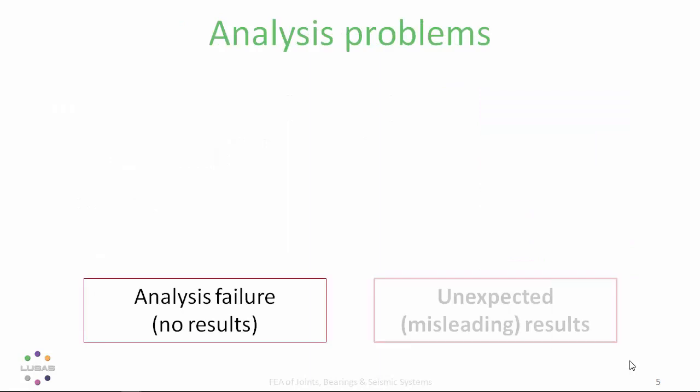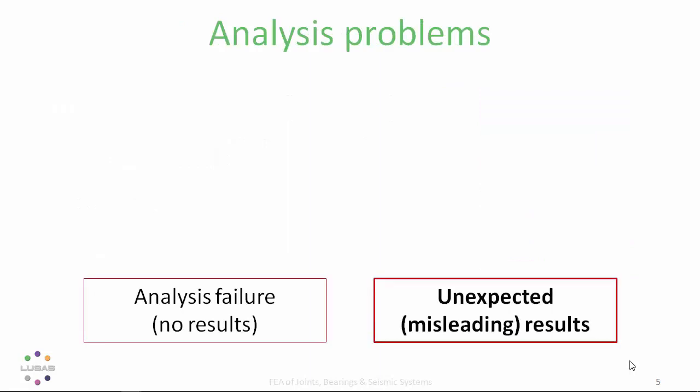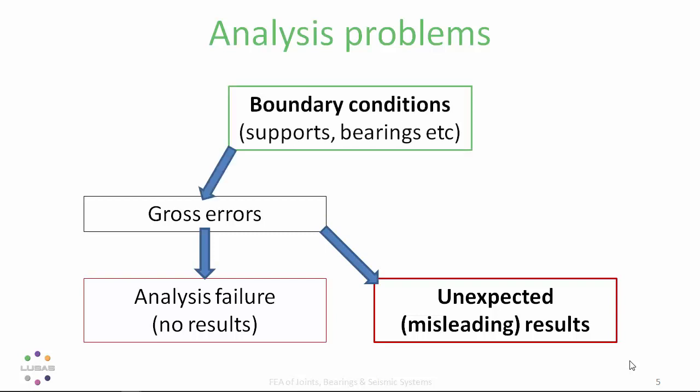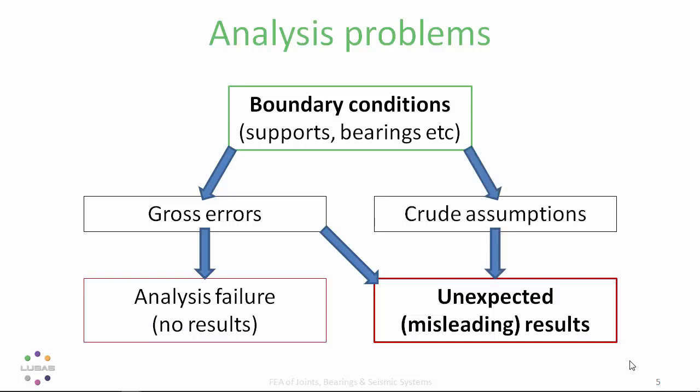Joints and bearings often behave like mechanisms — they slide and can't really be represented by fully connected elements, and this causes problems. The LUCIS support desk helps thousands of engineers each year looking at failed analyses. Gross errors and crude assumptions for boundary conditions are amongst the most common causes of misleading results. Engineers may even forget to add any supports, or make crude assumptions such as treating supports as infinitely rigid — but nothing is infinitely rigid.